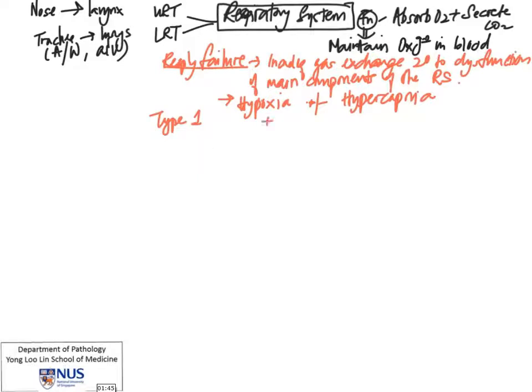There are two types of respiratory failure: type 1, which comprises hypoxia without hypercapnia, and type 2, in which you see both hypoxia and hypercapnia.